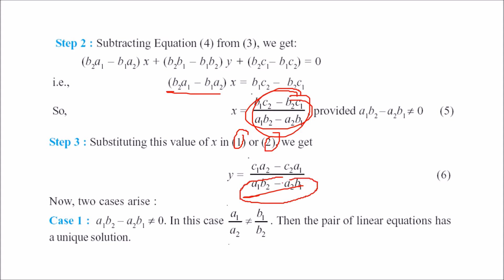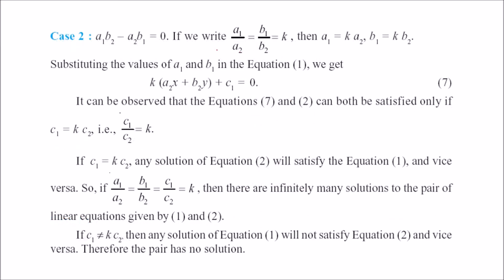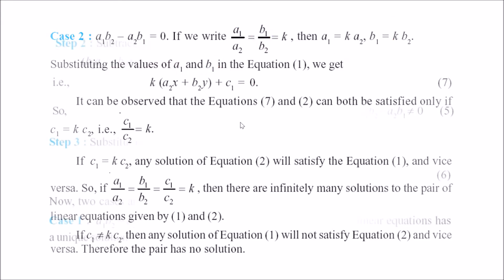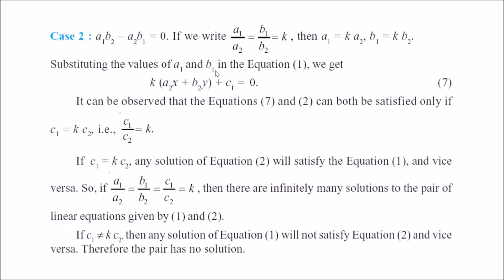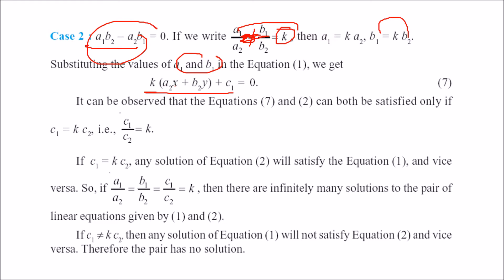If (a1·b2 minus a2·b1) equals zero, consider the ratios a1/a2 and b1/b2. If these are equal, let the common ratio be k, so a1 equals k·a2 and b1 equals k·b2. Substituting into equation 1 and observing from equation 2, we find that c1/c2 also equals k, meaning a1/a2 equals b1/b2 equals c1/c2, which gives infinitely many solutions.